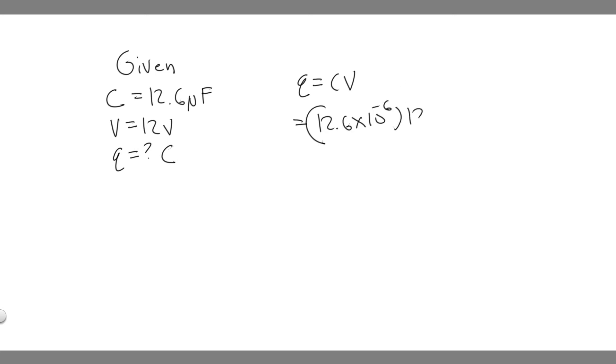And so now we multiply it by 12 and that's going to give us Q. So go ahead and plug this in your calculator. So go ahead and do that: 12.6 times 10 to the minus 6 and then multiply that by 12.